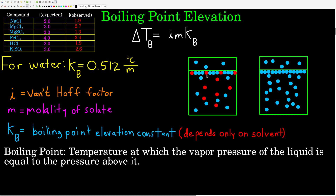By adding the solute — shown in the picture on the left — there is less space available for the solvent molecules to escape into the gas phase. So at the same temperature and the same pressure above the solution, there are fewer molecules of the solvent escaping, fewer molecules in the gas phase at equilibrium, and a lower vapor pressure. By adding a solute to a solvent, we elevate its boiling point. It will not boil until it reaches a higher temperature, at which point the vapor pressure of the liquid will equal the pressure above it.